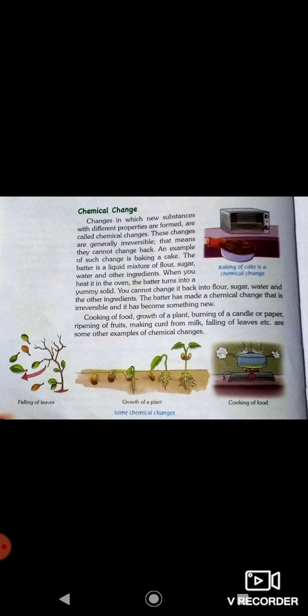For example, cooking of food — you make a roti, can you get the flour back? No. Growth of a plant — a small plant becomes a tree, can you reverse that? No. Burning of a candle or paper: students, listen carefully — tearing paper is a physical change, but if we burn the paper, it converts into ash. That is a chemical change. So tearing paper is physical; burning paper is chemical.